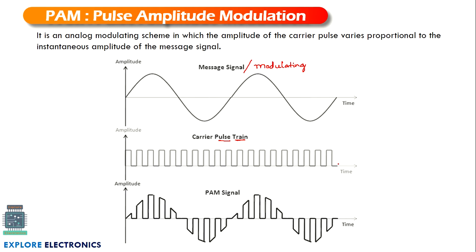Let us understand how the PAM signal is generated. After modulation we get the modulated signal; before modulation we have the modulating signal. PAM is the simplest form of pulse modulation technique. In PAM, the signals are sampled at regular intervals — you can observe the signal being sampled at regular intervals of time.